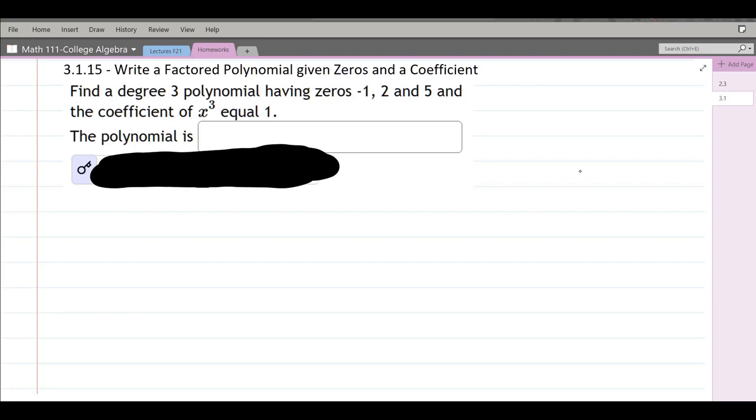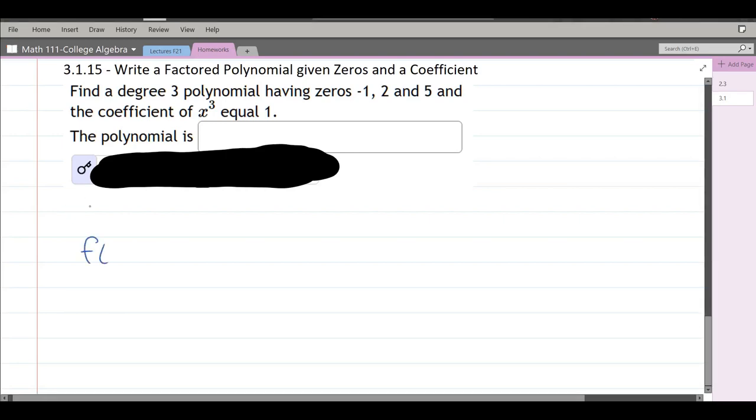So our polynomial will be f of x equals a times x minus the first root times x minus the second root times x minus the third root.